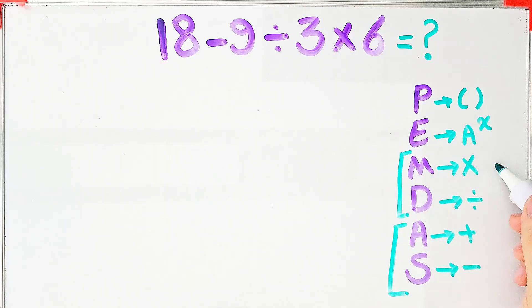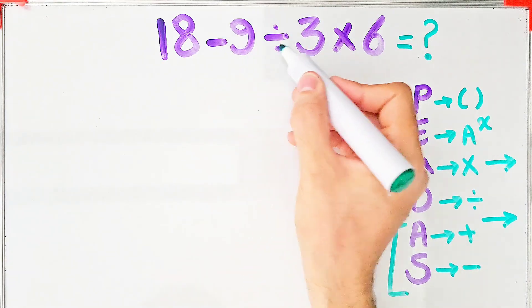When we have both in an expression, we start from the left and simplify the question. In this question, we have subtraction, division, and multiplication.